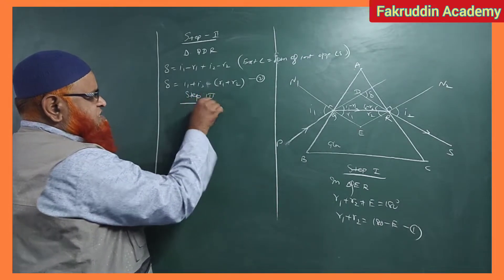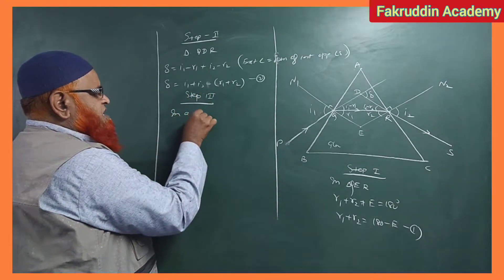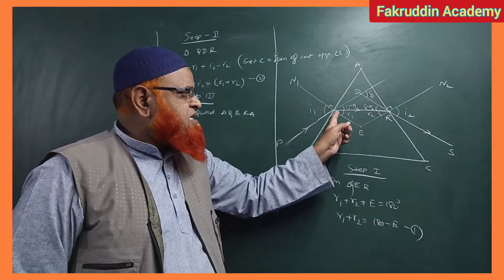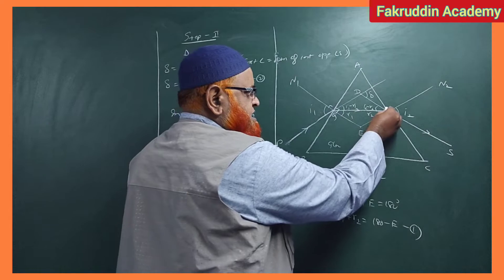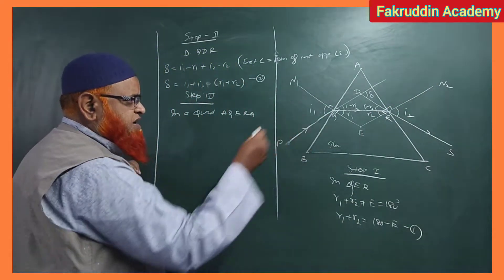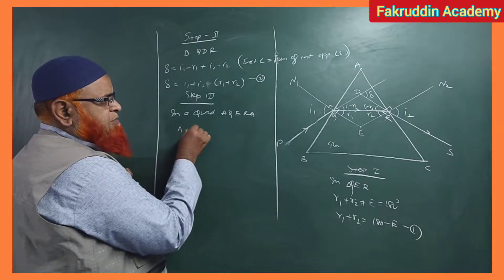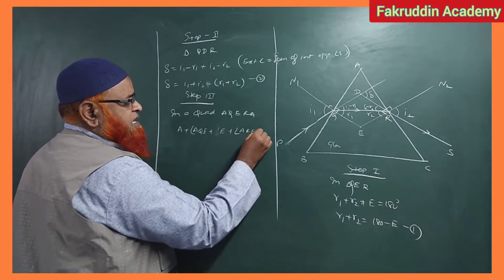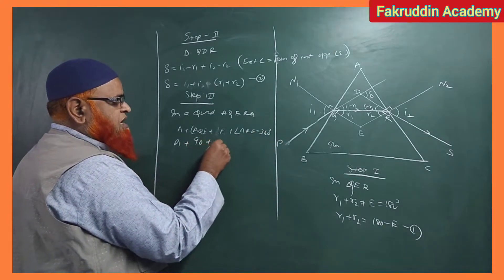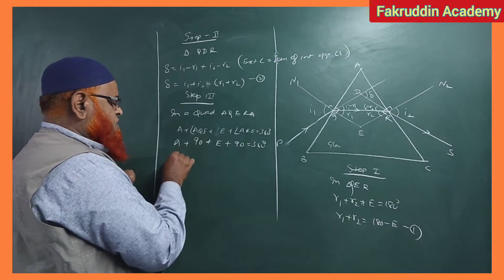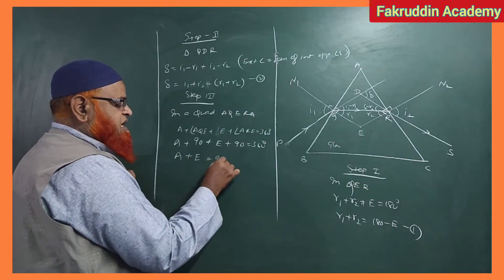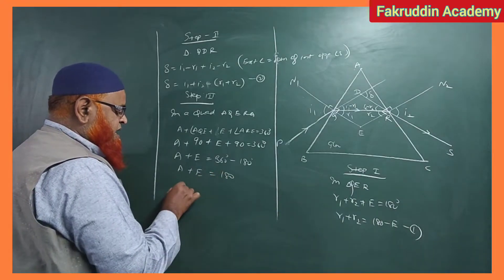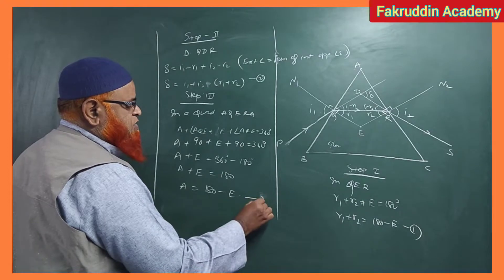The final step is step number 3. In this third step, we consider quadrilateral AQERA. In this quadrilateral, this angle is 90 degrees and this angle is 90 degrees because we are drawing the normals here. So angle A plus angle AQE plus angle E plus angle ARE equals 360 degrees. Since the two normal angles are each 90 degrees, we get A plus E equals 180, so A is equal to 180 minus E. Let this be equation number 3.